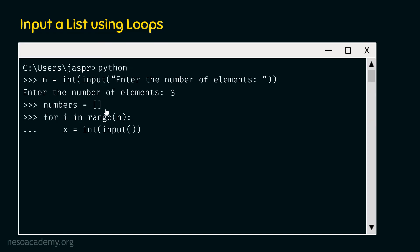After receiving the input, we must store it inside the numbers variable. For this, we use the append method, which has the capability to add items at the end of a list. Right now the list is empty. If the user inputs 67, x points to 67, and numbers.append(x) adds 67 at the end of the list. The new list will consist of one item: 67.